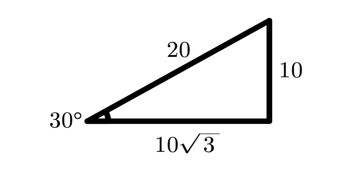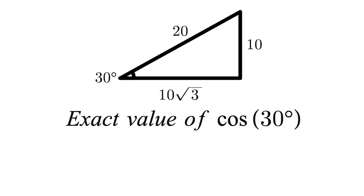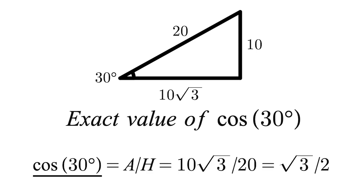While we've already solved the question, let's find the exact value of cosine 30 from this triangle. Cosine 30 is equal to 10 root 3 over 20, which simplifies to root 3 over 2.